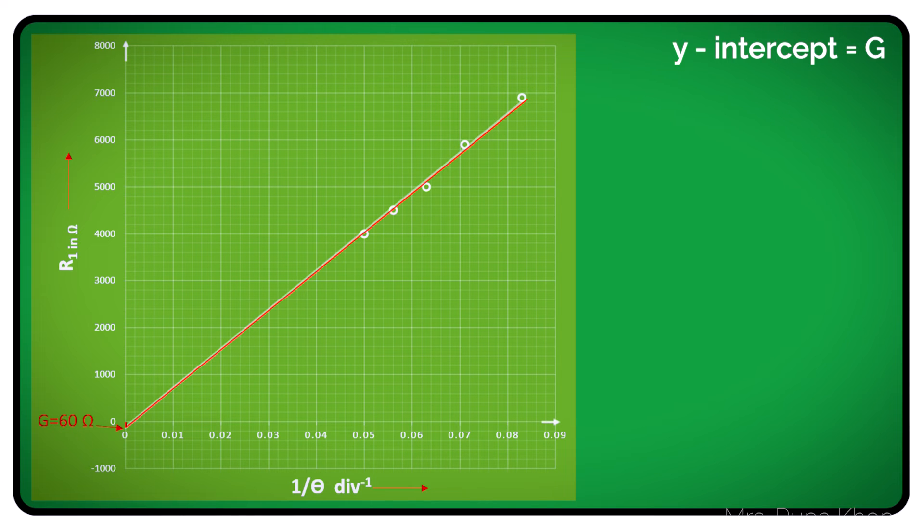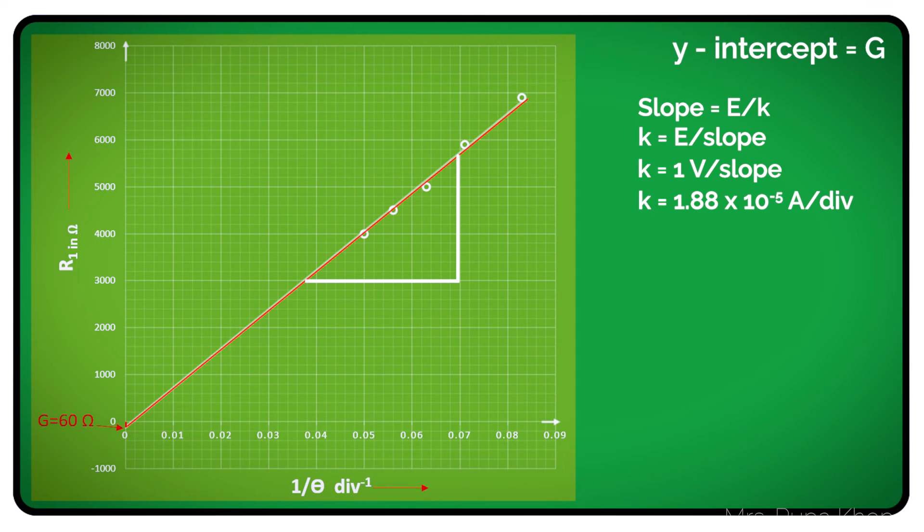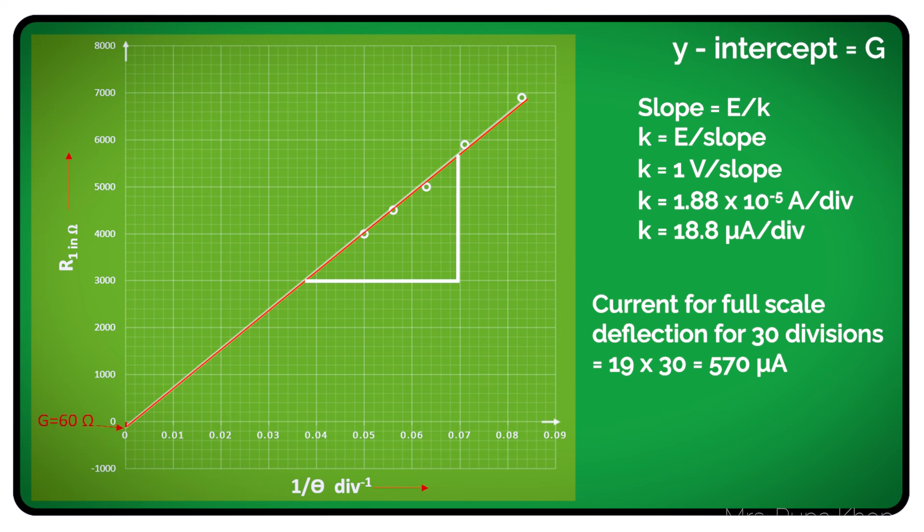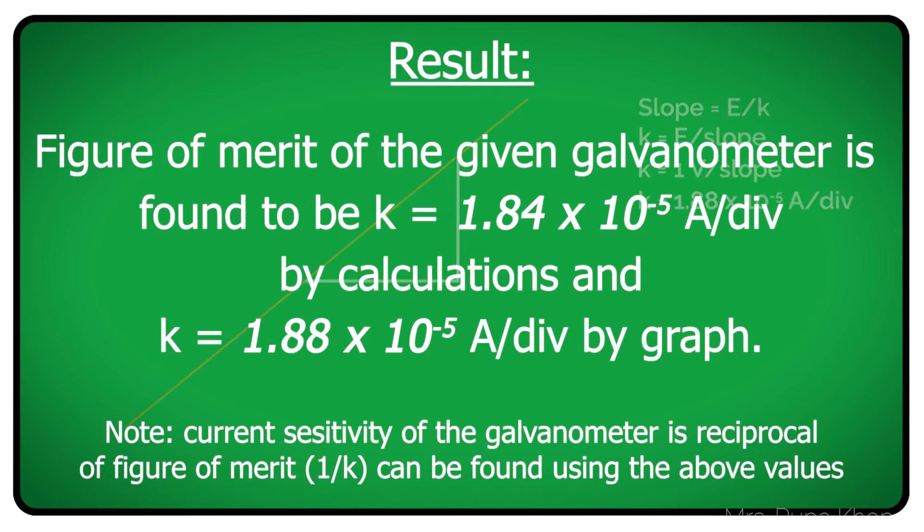Then you have to find the slope. Slope is E upon K. So K is equal to E by slope. E, you know, you have found out E. One volt upon slope. And we get K value from the graph. From the graph is 1.87487. Actually we should take it as 1.88 into 10 raise to minus 5 ampere per division. That means it is 18.8 microamps per division. So if it is 18.8, let's say 19 microamps per division and 19 into 30 full scale deflection, so you will get full scale current in the galvanometer. So this figure of merit is an interesting experiment and we can find out how much current flows in a given galvanometer.